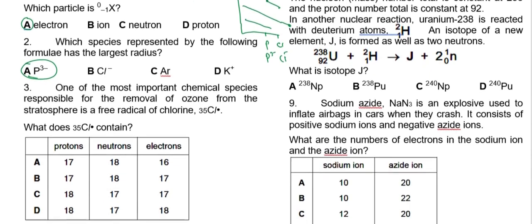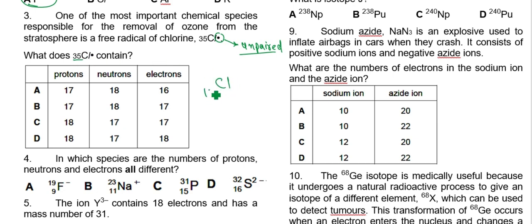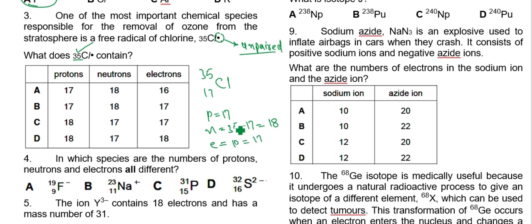Question 3: one of the most important chemical species responsible for the removal of ozone from the stratosphere is a free radical of chlorine. A free radical means an unpaired electron — there is no gain or loss of electrons. Chlorine has atomic number 17 and mass number 35, so there are 17 protons. Neutrons = 35 minus 17 = 18. Electrons equal protons = 17. The right answer is B.